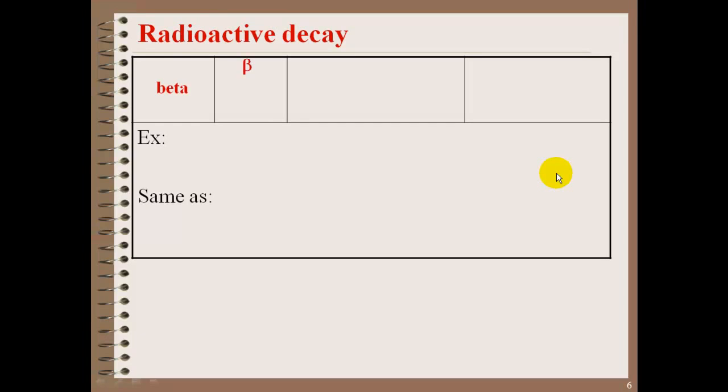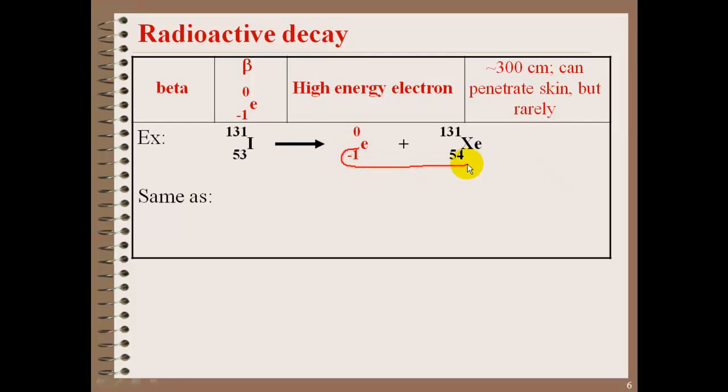Here's another example. A beta decay is a beta particle. You can use the Greek symbol beta, or you can use the electron, because it is a high-energy electron. With beta decay, it can travel approximately 300 centimeters and can penetrate your skin, but this is very rare. An example of this is I-131. It goes through a beta decay, and it will produce Xe-131.